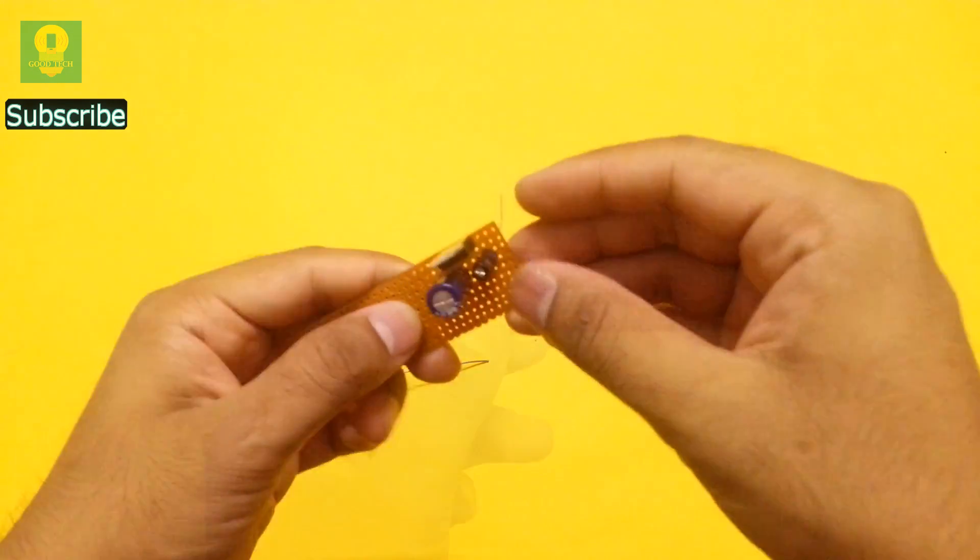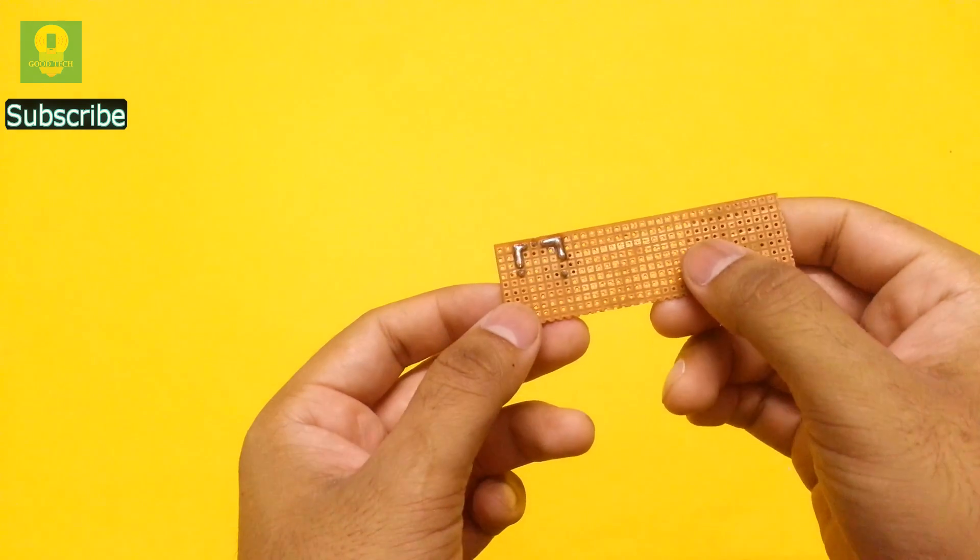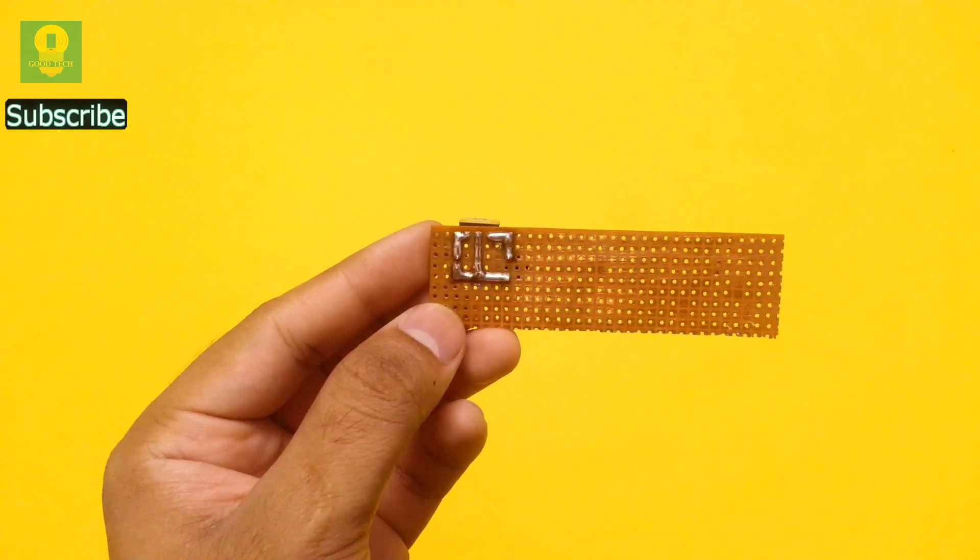Similarly, insert and solder the 100 microfarad capacitor to the output pin of 7805 IC. Now make all the ground connections.